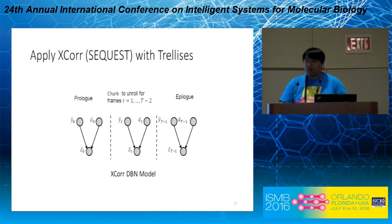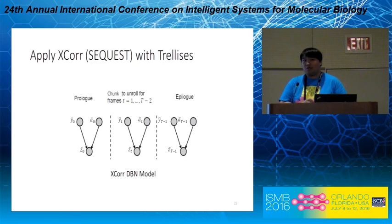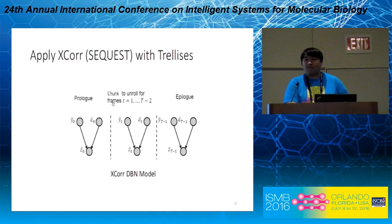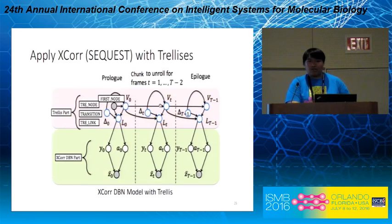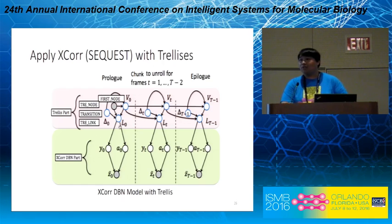Next, we show how to apply trellises to the XCorr or Sequest scoring function. We call XCorr a linear scoring function, as it is essentially a dot product between two vectors, which can be represented by a very simple DBN model. To apply the trellis to it is also very simple: we keep the bottom XCorr DBN part unchanged and stack the trellis DBN on top of it, so the bottom part can read data from the trellis via the trellis link variable.